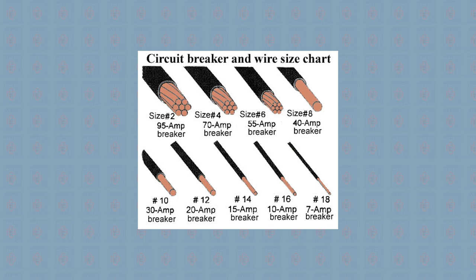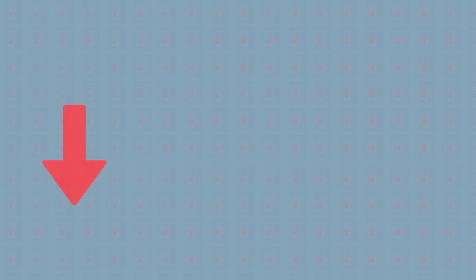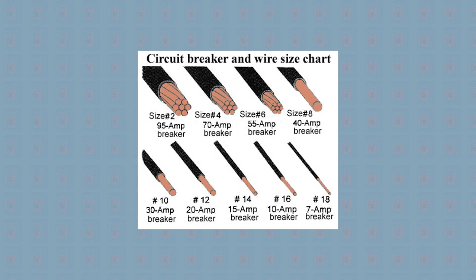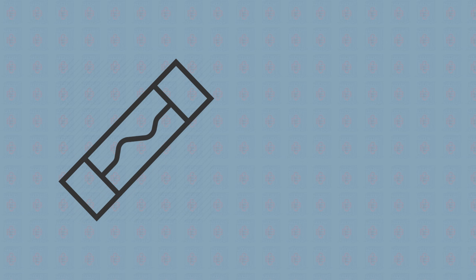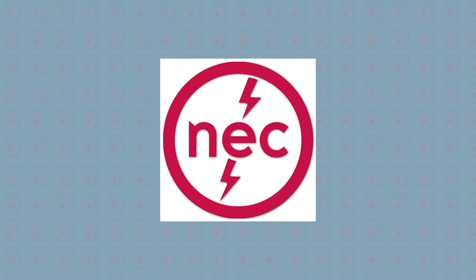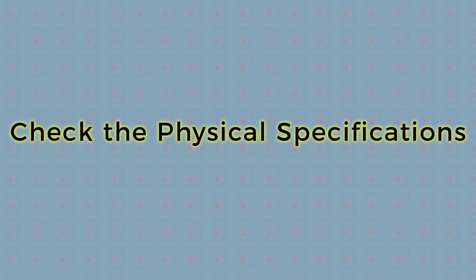You'll find the gauge printed on the wire that will connect to the new breaker. The lower the gauge, the higher the breaker amperage. For example, a 10-gauge wire will need a 30-amp breaker, while a 14-gauge wire requires a 15-amp unit. If adding a new circuit, always account for 125 percent of the circuit's current when choosing an amperage rating. This ensures the safety of the system and is required by the US National Electrical Code.